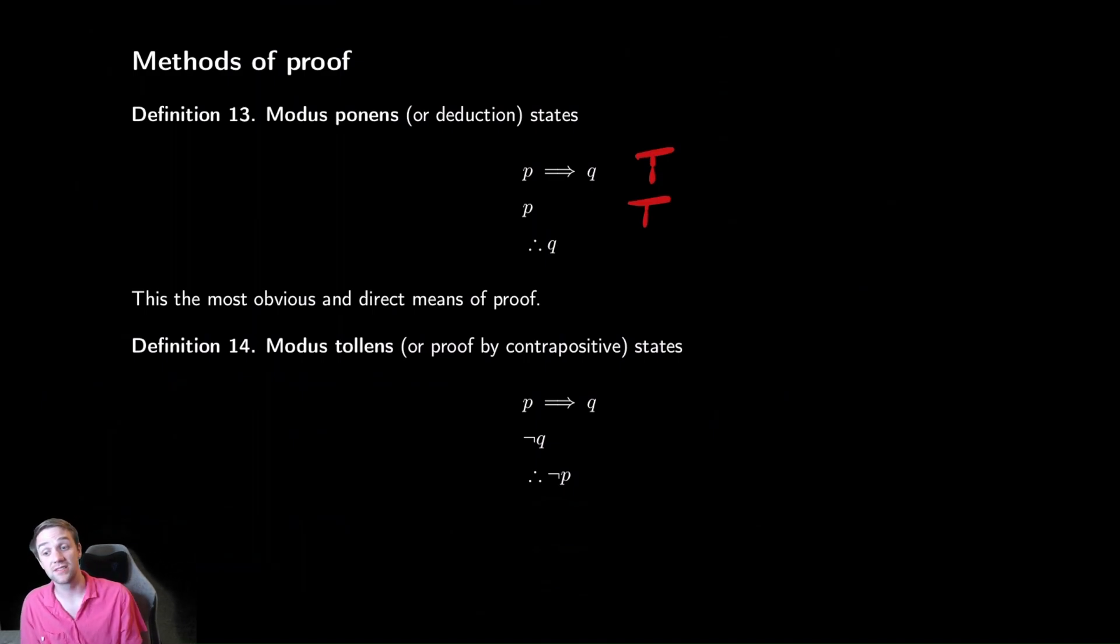Modus tollens is using the contrapositive nature to make a very similar claim. If my name is Nick, then I live in Columbus. Someone walks up and says, hey, he doesn't live in Columbus.